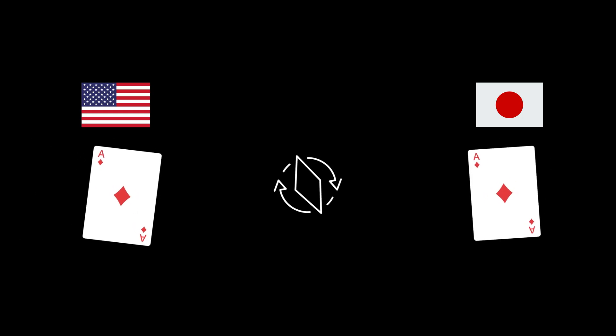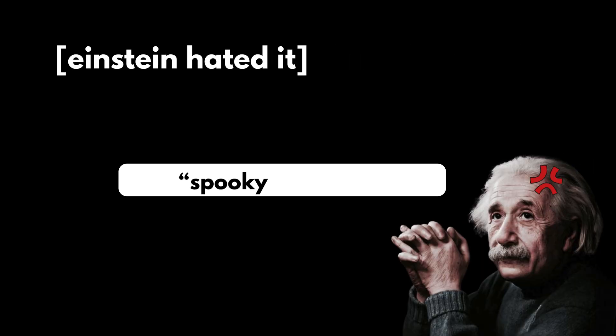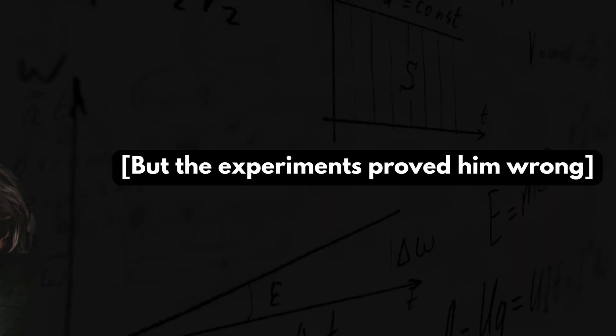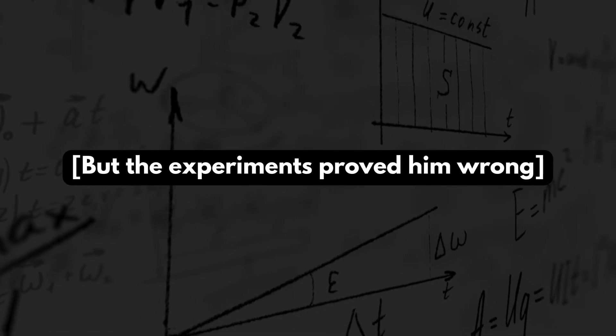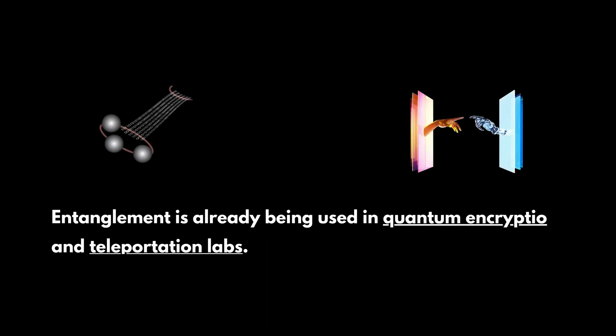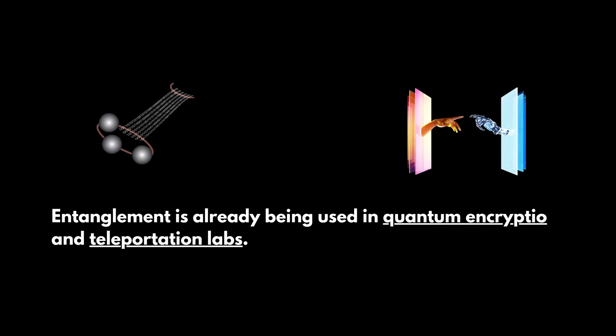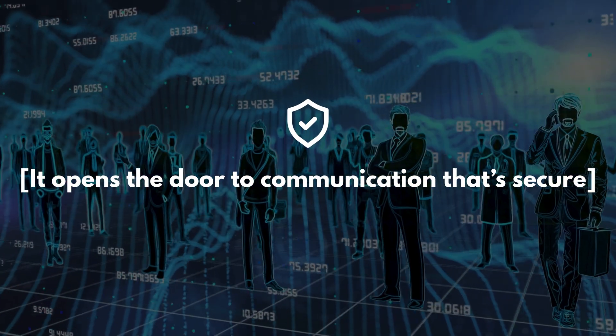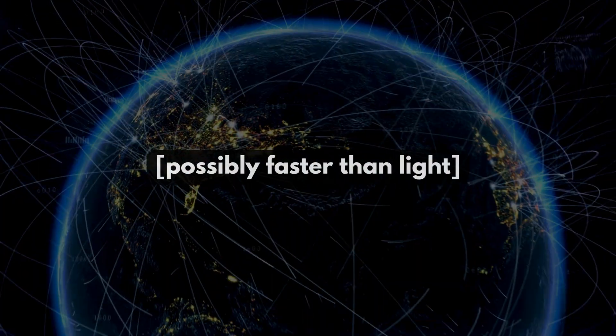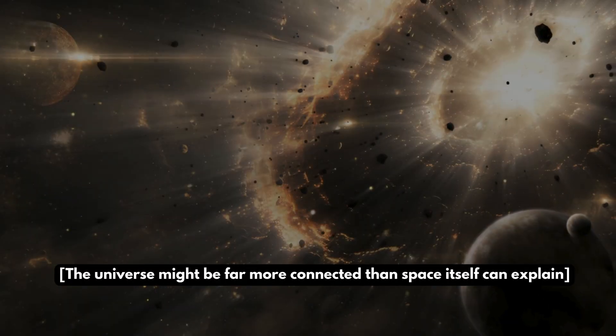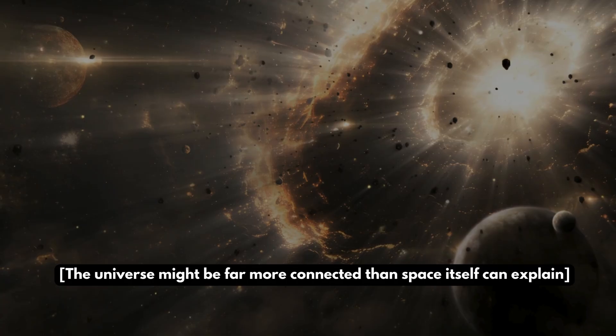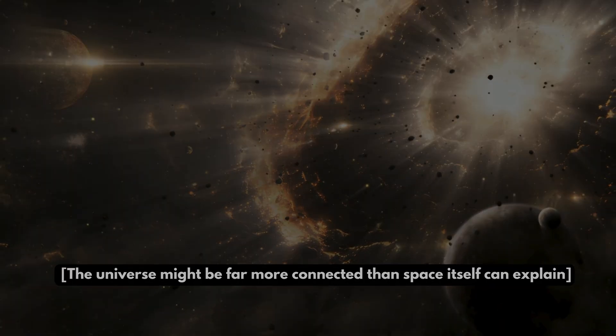Without any signal. Einstein hated it. He called it spooky action at a distance. But the experiments proved him wrong. We don't know how it works, but we know that it works. Entanglement is already being used in quantum encryption and teleportation labs. It opens the door to communication that's secure and possibly faster than light. The universe might be far more connected than space itself can explain.